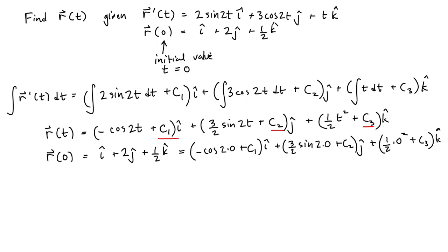Let's equate components, because for two vectors to be equal, their components must be equal. The x component on the left side must equal the x component on the right side. The y component on the left side must equal the y component on the right side. And the z component on the left side must equal the z component on the right side.